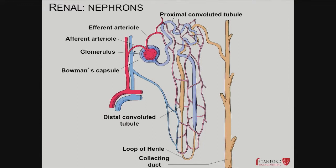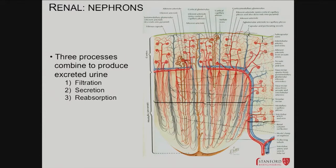Here's a single nephron at higher detail. You can see the afferent arteriole, efferent arteriole, the glomerulus structures and the Bowman's capsule. You've got the proximal convoluted tubule which comes right off Bowman's capsule, your loop of Henle, your distal convoluted tubule, and the collecting duct which goes out to the ureter. Then if you add in all the other nephrons, you can see all the loops of Henle at different depths but all extending down into the depth of the medulla. There are several processes that create urine: filtration, secretion, and reabsorption.